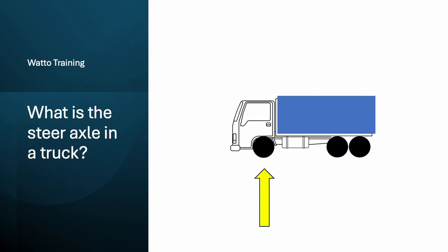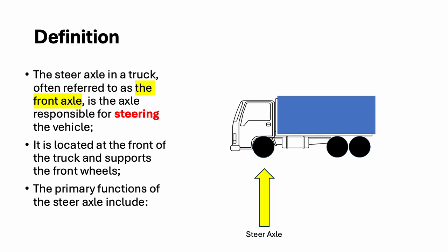Hi, this is Brendan from Watto Training, and in this tutorial we ask the question: What is the steer axle in a truck? The steer axle in a truck, often referred to as the front axle, is the axle responsible for steering the vehicle. It is located at the front of the truck and supports the front wheels.